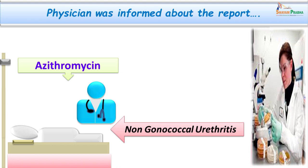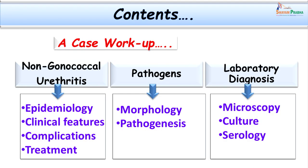The drug of choice in chlamydial infections causing non-gonococcal urethritis is azithromycin. The patient was put on azithromycin and recovered uneventfully. Treatment was important because otherwise the patient would have gone on to develop complications, which are usually expected if the condition is not detected timely and specific treatment is not given.